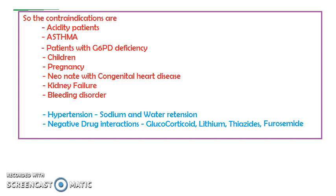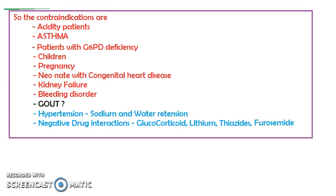Let us now summarize the contraindications of aspirin. Mainly ulcers — you should not give aspirin in acidity patients. Also in asthma patients you should not give it, because it causes bronchospasm. It also causes hypersensitivity and anaphyloid reactions.